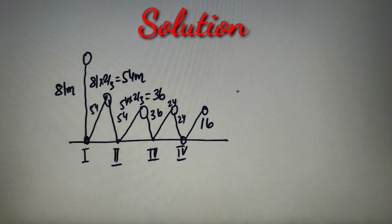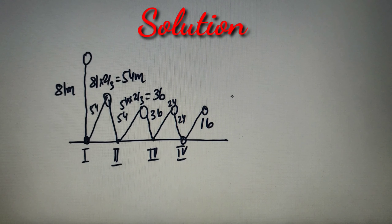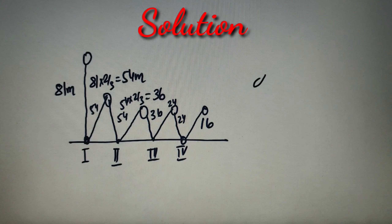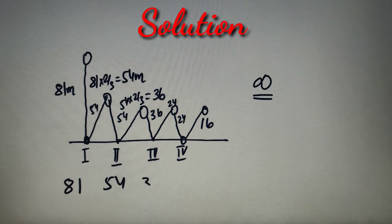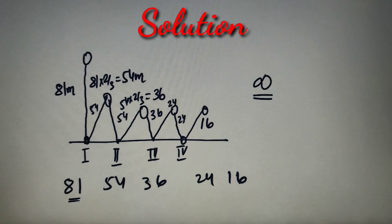Let's solve Part B of the question. We use the same setup since it follows the same pattern. According to Part B, we have to calculate the total distance the ball will travel before coming to rest. We don't know how many bounces the ball will take, so we assume it will take an infinite number of bounces. Whenever a case of infinity appears, we use the formula of a geometric progression (GP). This question follows the GP pattern: the first term is 81, then 54, then 36, then 24, then 16 — so a = 81 and r = 2/3.